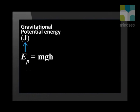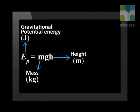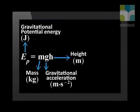In this equation, M represents the mass of the object in kilograms, H represents the height of the object above its reference point in meters, and G is the gravitational acceleration. Remember that on Earth, G has a value of 9.8 meters per second squared.